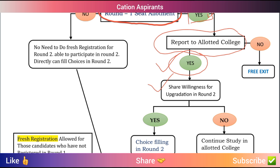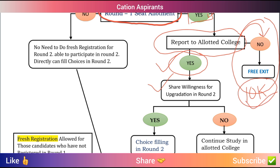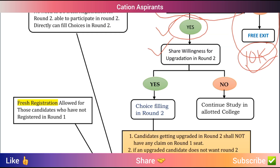If you do not want admission after Round 1, and you did not report to the college, you can take a free exit. If you take a free exit, you will need to pay a security deposit, and your registration fee will be completely refunded. You will also get back the registration fee in this case.